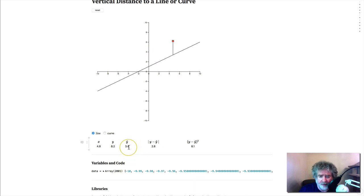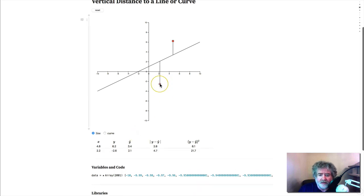So if you want this distance here, then you should subtract the two y coordinates. Now depending on where the point is, you might get a negative number if you subtract. So you don't want that.